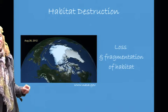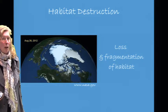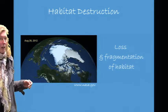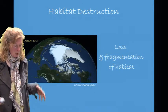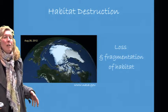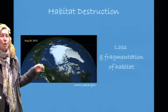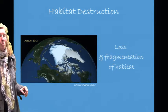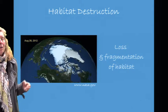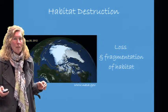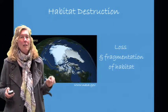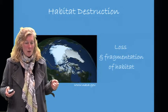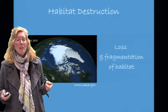Habitat destruction is generally the loss and fragmentation of habitat. A satellite image taken in August 2012 shows sea ice at the North Pole looking down on the Arctic. A line shows past ice occurrence, and we're noticing approximately a 40% decrease in that ice coverage. This is habitat destruction because for pagophilic species — ice-loving species — they are literally losing their habitat; it is melting beneath their feet. Pagophilic species would include polar bears, ice seals, and walrus.